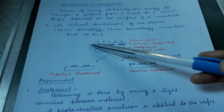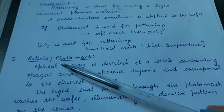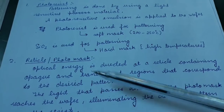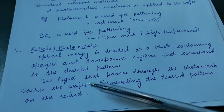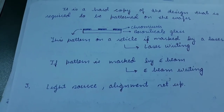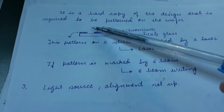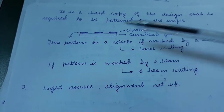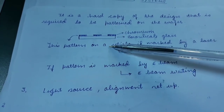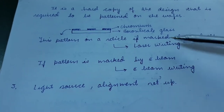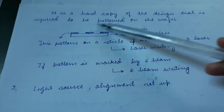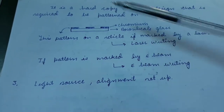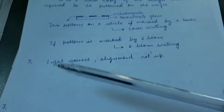You also require a photomask — a reticle. Optical energy is directed at the reticle containing opaque and transparent regions corresponding to the desired pattern. The light that passes through the photomask reaches the wafer, illuminating the desired pattern on the resist. It is a hard copy of the design to be patterned on the wafer, usually made of chromium on borosilicate glass — transparent where there is no chromium, opaque where there is chromium. The pattern of chromium can be made by laser writing or e-beam writing.